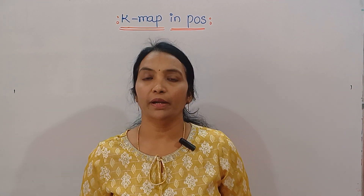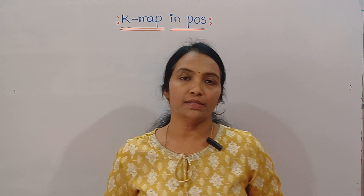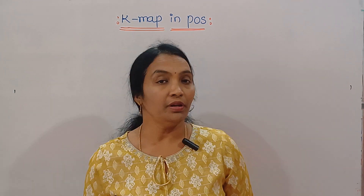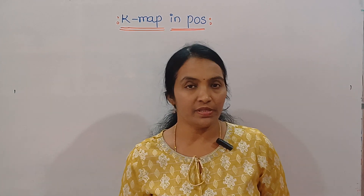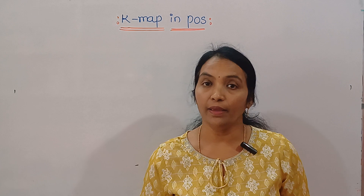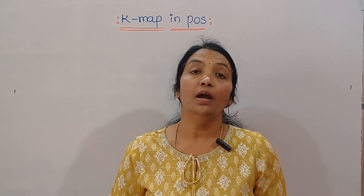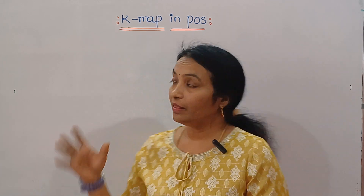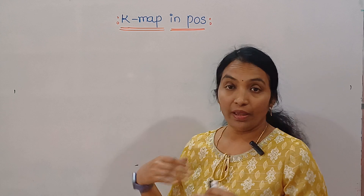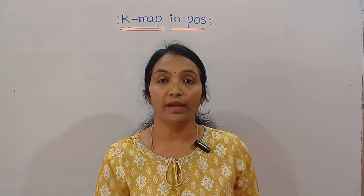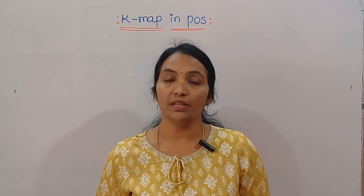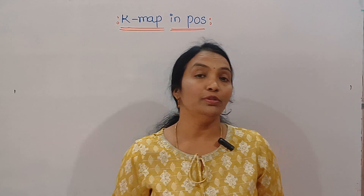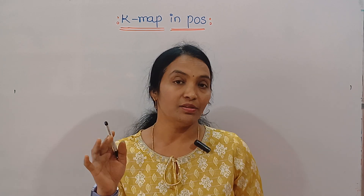Hi all of you. Welcome back to Ramaretti Maths Academy. This video is now working on SOP problems. This map is called Karnaugh map and Boolean expression. We are doing any variable 2, 3, 4, 5, up to 6 with don't care condition. You can see a link in the description of the playlist.